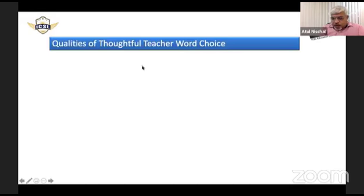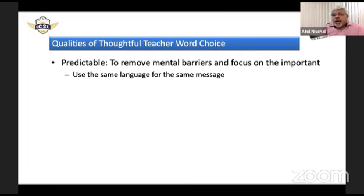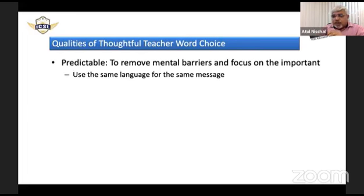What are the qualities of thoughtful teacher word choice? The first important criterion is that we need to be predictable — we don't want to keep students guessing. There are mental barriers to communication, and to remove them, it's important that students understand and that their expectations are met. Using the same language repeatedly makes it easy for students to focus on what is important.